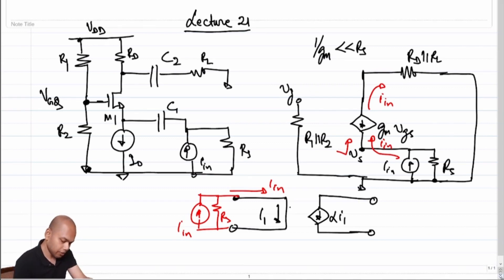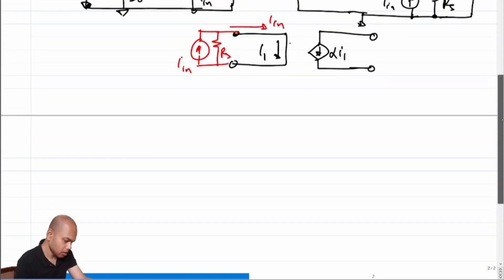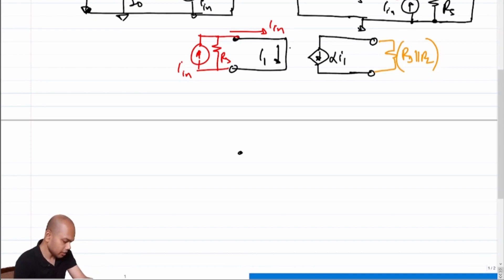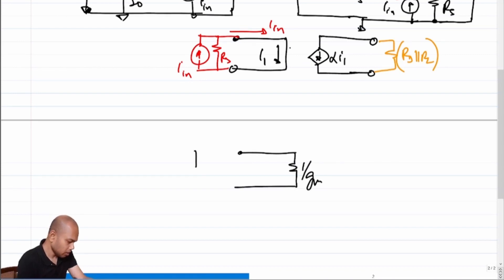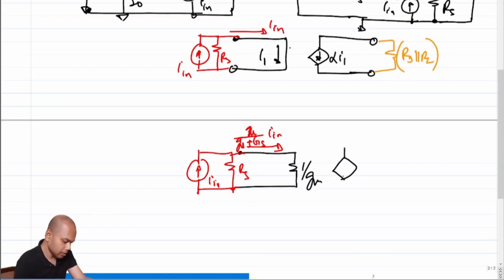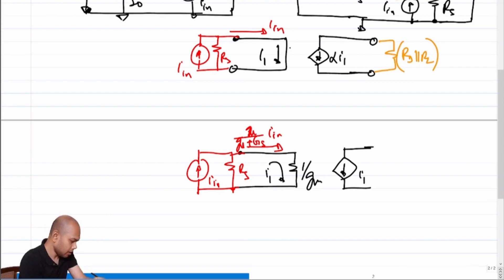However, in our case the input is not short-circuited; the input impedance is 1/gm. In the presence of IIN and Rs, the amount of current that will flow into 1/gm is gm/(gm + gs) times IIN, where gs = 1/Rs. This buffering factor is 1, so if this current is I1, the output flowing into RD parallel RL is also I1.